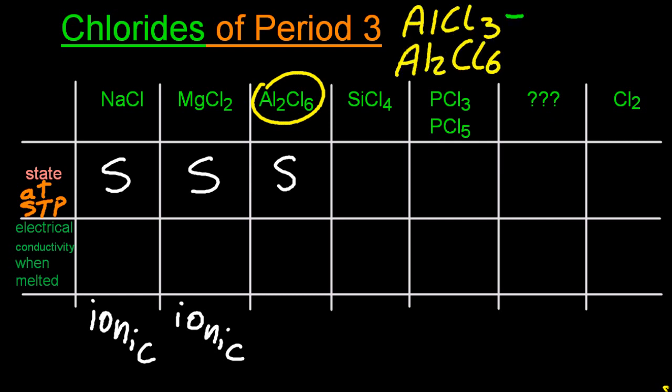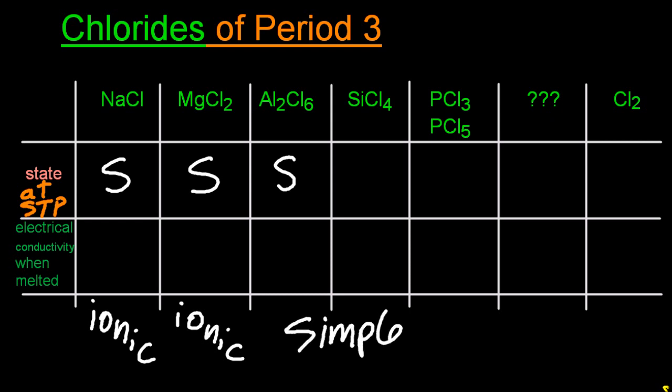If it's the empirical formula, then it's going to be ionic. So AlCl3 is ionic, but Al2Cl6, that's not empirical, so that's implying covalent in this case. Al2Cl6 is going to be covalent. So that's going to change the conductivity.